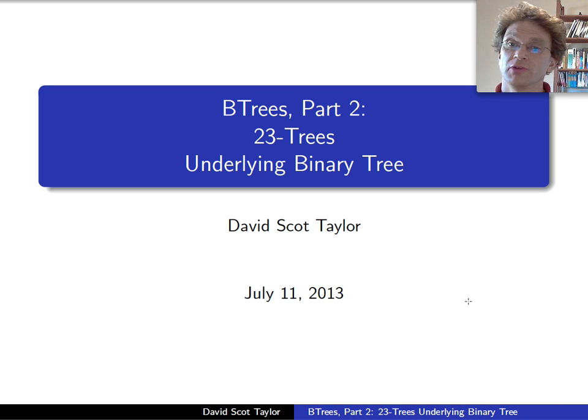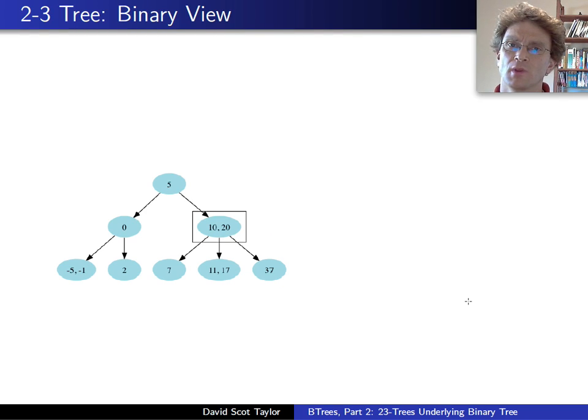To continue our talk about 2-3 trees, I mentioned in the first video that lots of data structures use these rotations to take a binary search tree and balance it. 2-3 trees, they look like they don't do that, right? They look like they don't have rotations. They're not actually binary.